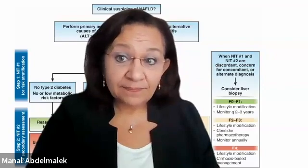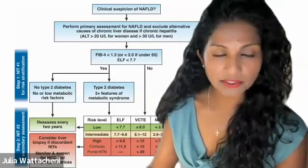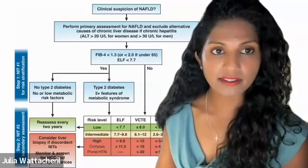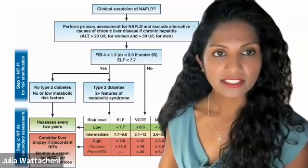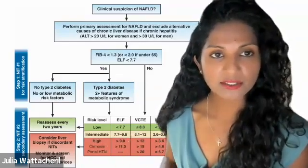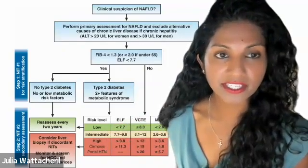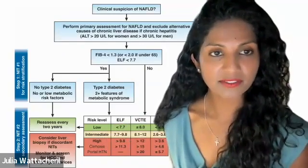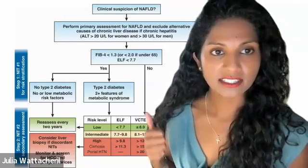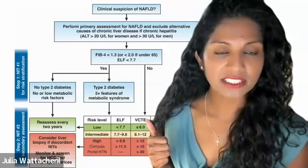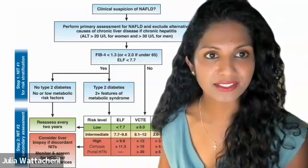What do you do when these biomarkers are discordant or indeterminate? That's an opportunity to clarify or resolve some of that discordance with either a liver biopsy or expert consultation. Capturing those patients with advanced fibrosis is clearly a priority, so when there is a discordant result, we recommend either liver biopsy and/or expert consultation in those instances.